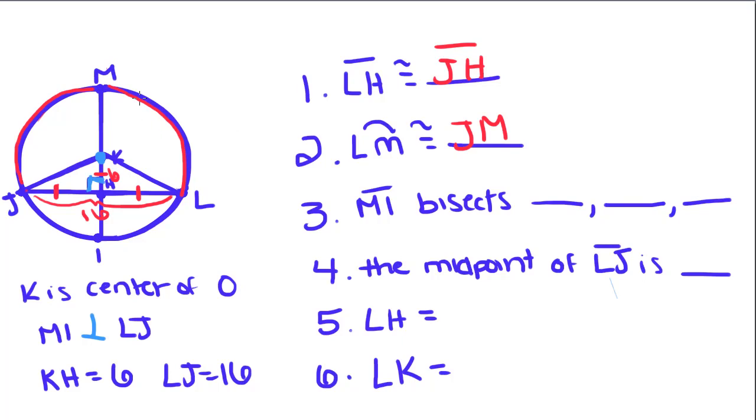MI bisects, first we're going to give it the line that it bisects, which is JL. It also bisects this whole entire circle so that it bisects IJM and MLI. Because it divides this entire circle up into congruent pieces.